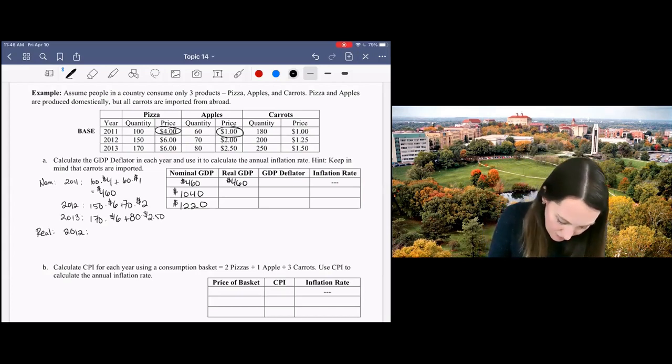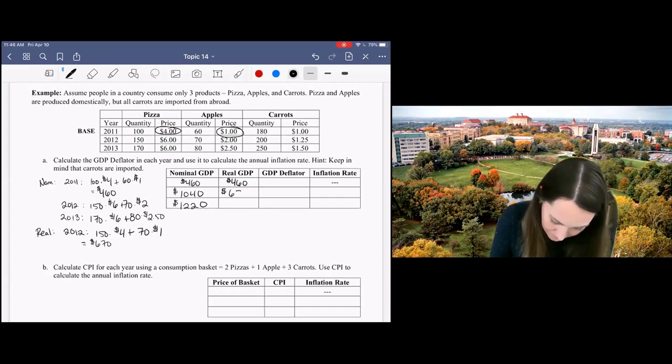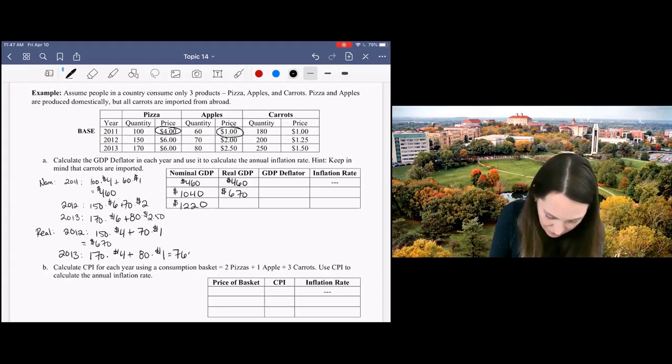But for 2012 we're now going to use the quantities from 2012 but the prices from 2011, so that will give me $670. And then in 2013 we use quantities from 2013 and prices from 2011. So we're holding prices constant at our base year prices and just allowing quantity to change over time.